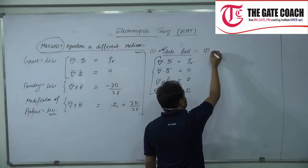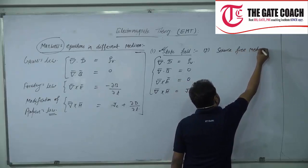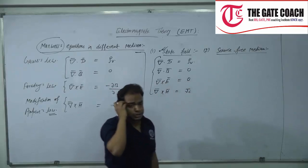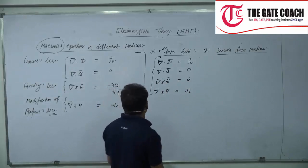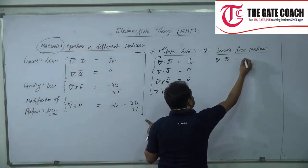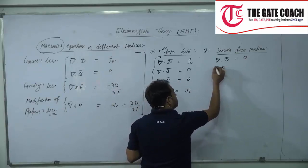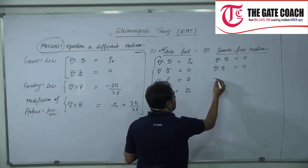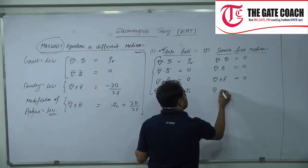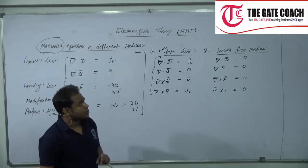The next one is the source-free medium. Source-free medium means a medium which has no charges and no currents. In such a medium, the four equations become: del dot D equals 0, del dot B equals 0, and del cross E equals 0.